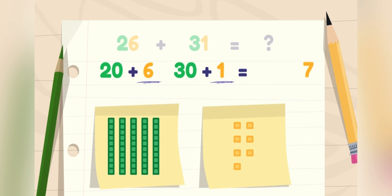There are seven ones. Next, let's add the tens. Two tens is 20. And three tens is 30. 20 plus 30 equals 50. The final sum is 50 plus seven, which is 57. 26 plus 31 is 57.